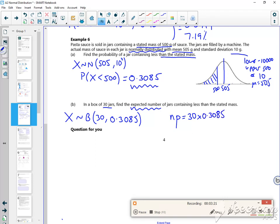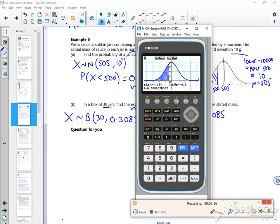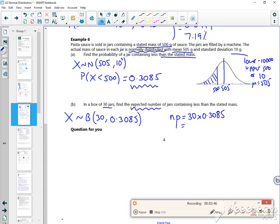So that would be 30 times by 0.3085. And if you think about it, that's what you did with that idea of flipping a coin a hundred times. So how many times do you get a tail? It's just the number of times, times by the probability. So if I do 30 times by 0.3085 on my calculator, 30 times 0.3085 is 9.255 times.